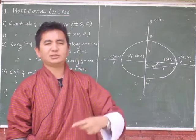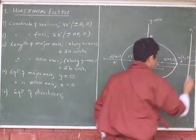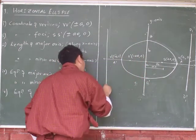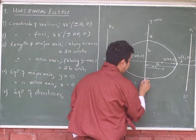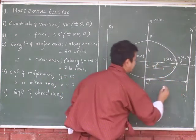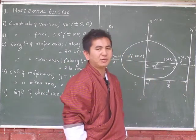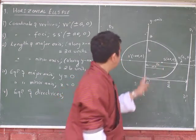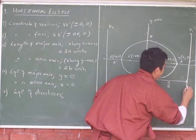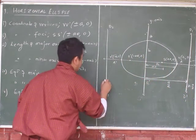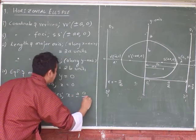Number five: equation of directrices. In case of ellipse we have two directrices — D1 D1 dash and D2 D2 dash — because we have two focus points. The distance from center to directrice is given by a/e. Since the directrices intersect the x-axis, the equation of directrices is x = ±(a/e).